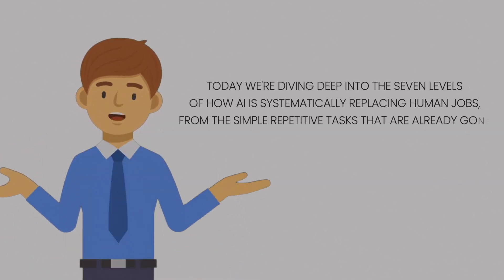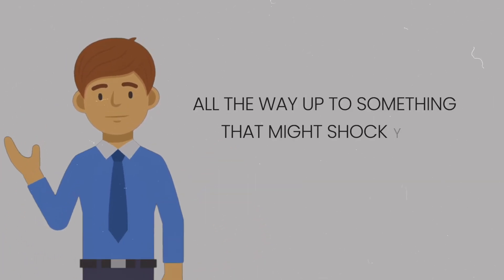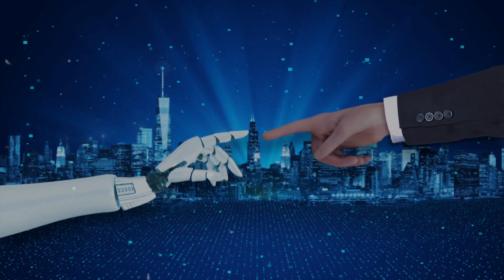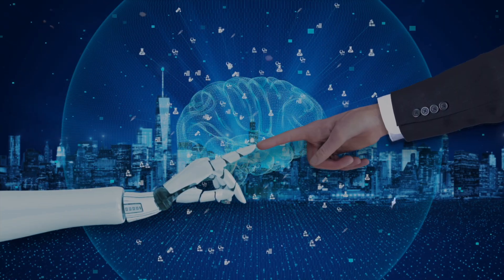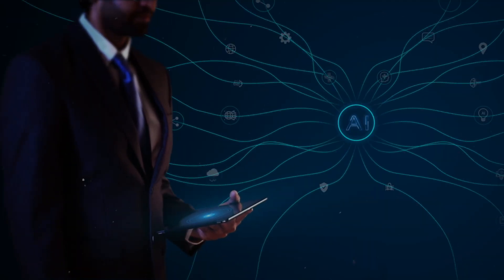Today, we're diving deep into the seven levels of how AI is systematically replacing human jobs, from the simple repetitive tasks that are already gone, all the way up to something that might shock you: algorithmic leadership where AI systems are actually making executive decisions for entire companies. And trust me, by the end of this video,